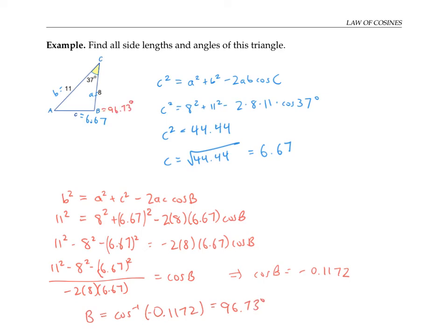The last thing I have to do is solve for angle A. I could use the law of cosines again and work it out just like I did for angle B. But a simpler method is to just use the fact that the sum of the three angles is 180 degrees. So A must be 180 degrees minus 37 degrees minus 96.73 degrees, which works out to 46.27 degrees.